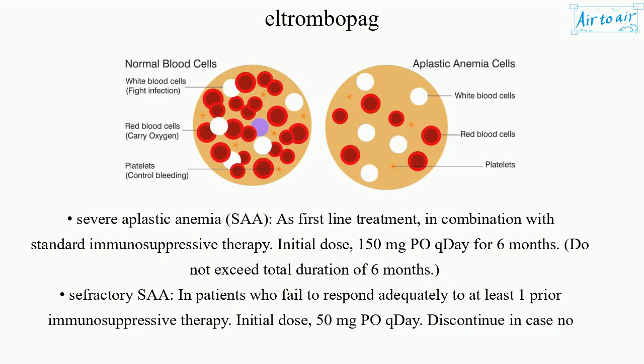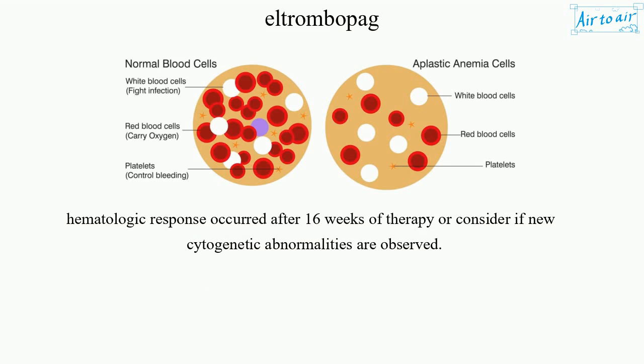Refractory SAA: in patients who fail to respond adequately to at least one prior immunosuppressive therapy. Initial dose: 50 mg orally once daily. Discontinue if no hematologic response occurs after 16 weeks of therapy, or consider discontinuation if new cytogenetic abnormalities are observed.